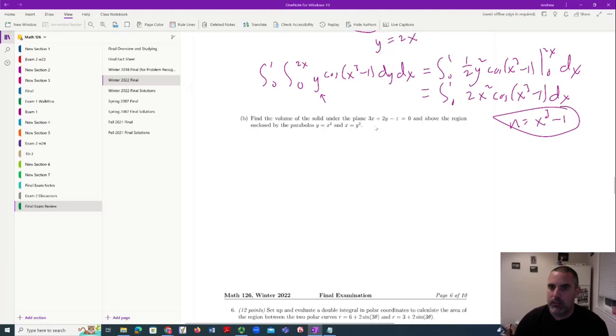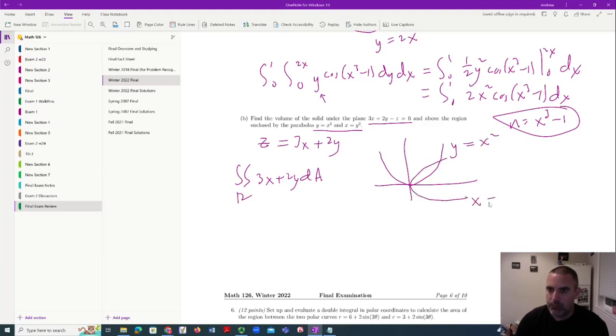Okay, let's look at another one. Find the volume of the solid under this plane and above this region. So step one is you solve for your z's. So we have z equals 3x plus 2y double integral 3x plus 2y dA. And then you need to draw this region. So it's y equals x². x equals y². There's our region. They intersect right here at 1. You can solve for the intersection.